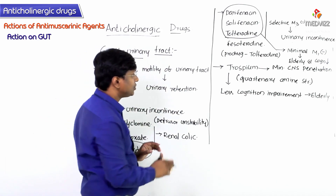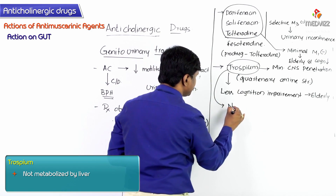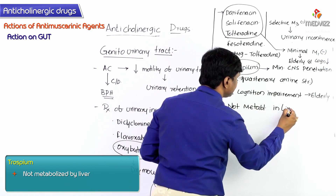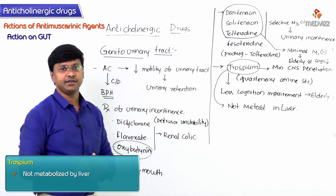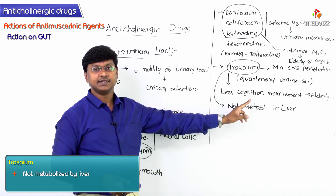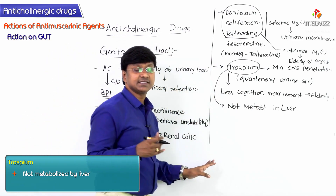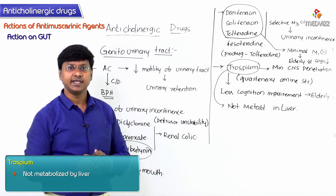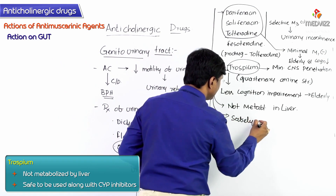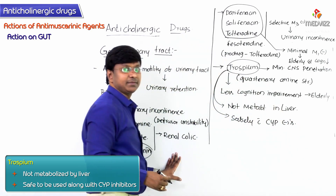Among all the drugs in this group, Trospium is the only drug that is not metabolized in the liver — all other drugs are metabolized in the liver. Because it is not metabolized in the liver, Trospium can be used safely along with CYP inhibitors, that is, cytochrome P450 system inhibitors.